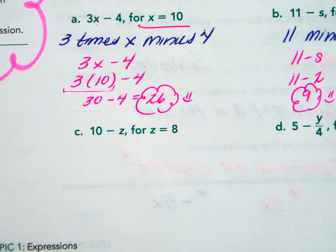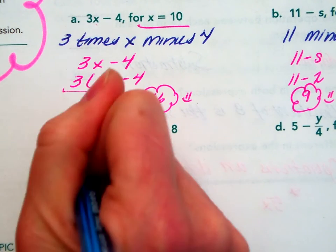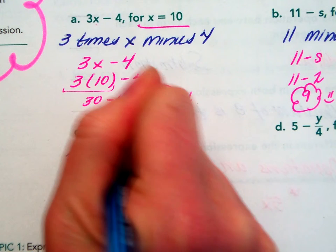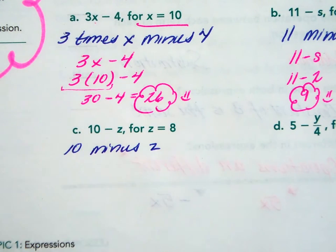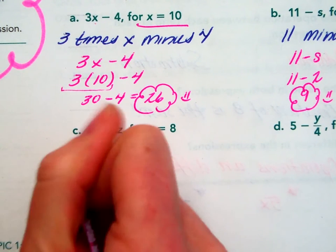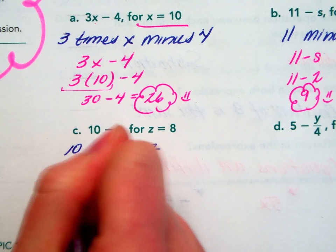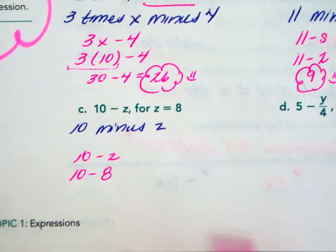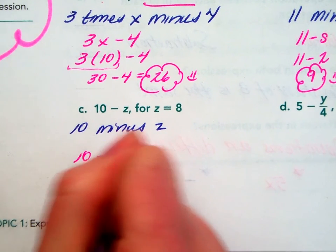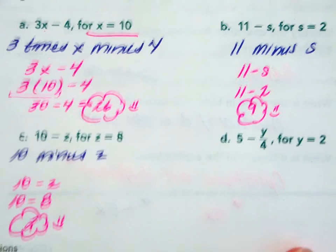Okay, we've got 10 minus Z. 10 minus Z. Z is worth 8. 10 minus Z turns into 10 minus 8. 10 minus 8, 2. Excellent work, dragons.